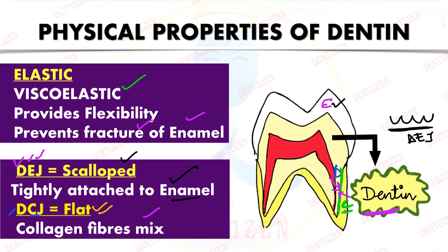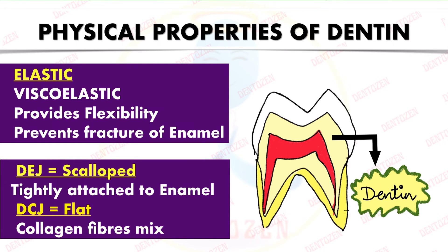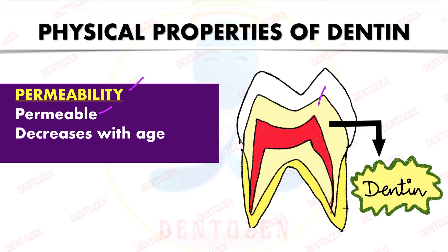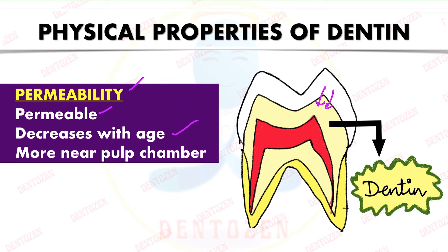Dentine is permeable — it allows substances to pass through it. However, this permeability decreases with age, and it is greater near the pulp chamber of the tooth.